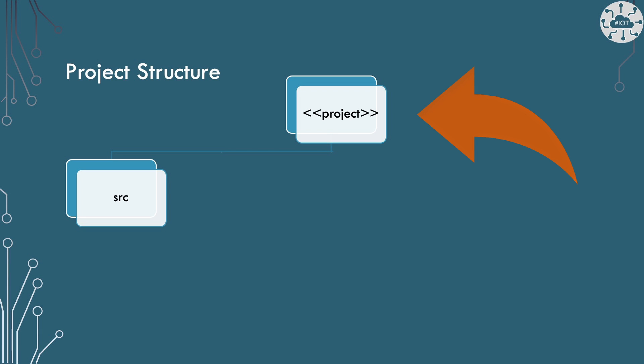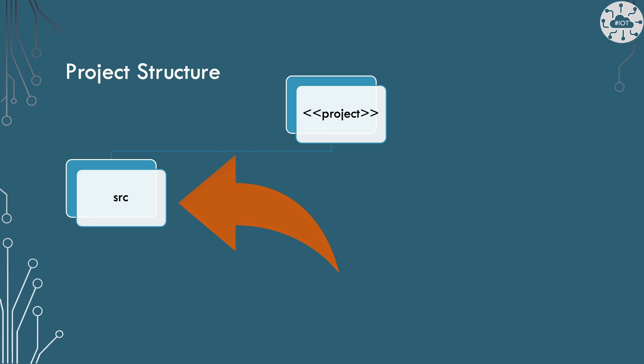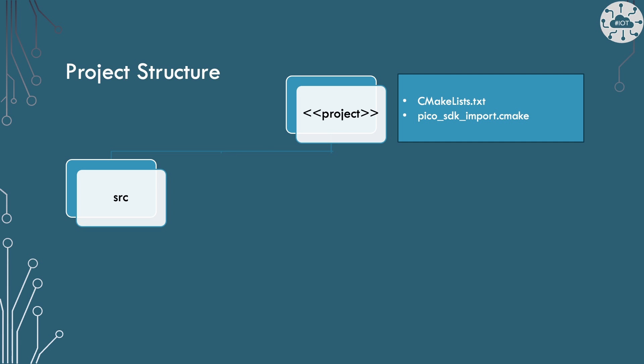The project is really just a folder, and all of the structure is based around that folder. In the example I'm talking about it was called 'one_pico_flash', but you could have any name. That folder contains all of your files. The most important folder in there is probably the source folder, 'src' — that's where we put all of our C code. There are also important control files in the top-level folder to help us build. When we issue the command 'cmake ..' that kicks off by loading the CMakeLists.txt file in the project folder, which defines the whole build process.